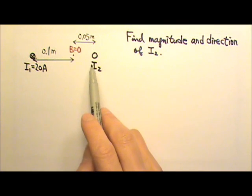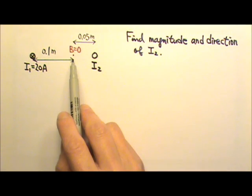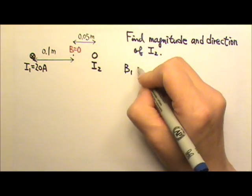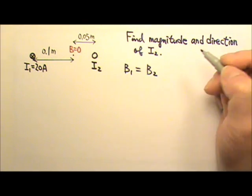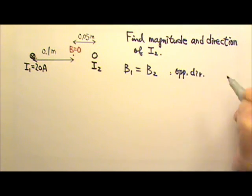There are two electric currents producing magnetic field over here, and the magnetic field is a vector. So in order for the net field to be 0, that must mean the field produced by I1 must equal the field produced by I2, and they must be in opposite directions so they can cancel.